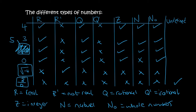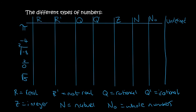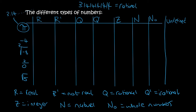Undefined is when the 0 is underneath. You can have a 0 on top — that just gives you 0, so that's fine. But you don't want a 0 underneath. Also, if you type pi on your calculator you'll see it's like 3.14 and the digits don't repeat. If the digits do repeat, like 1 4 1 4 1 4 the whole time, that is called rational. So rational is any number that can be written as a fraction, or when the digits repeat.